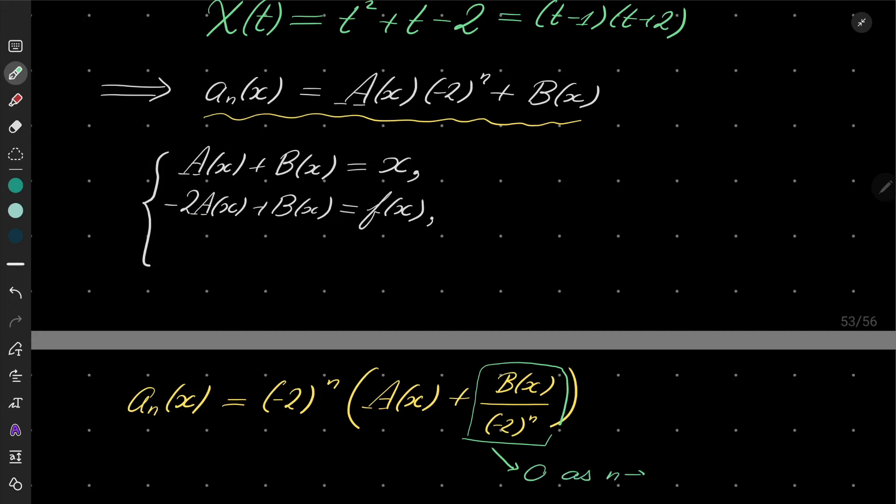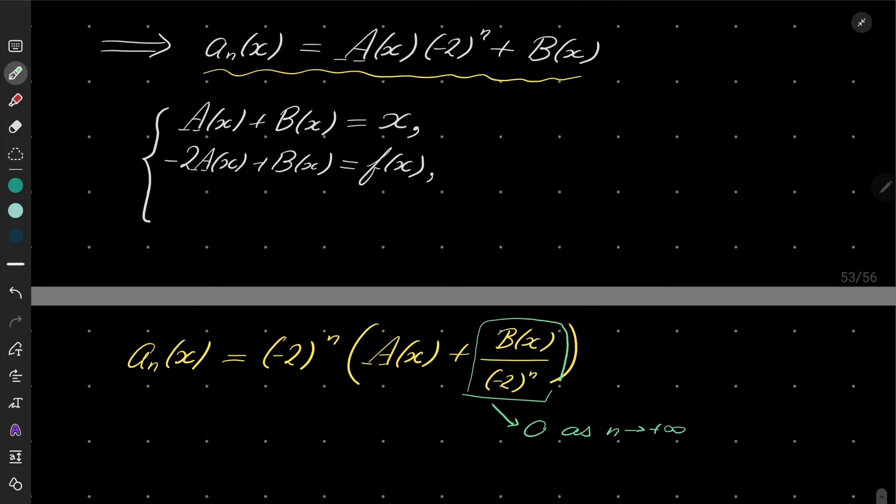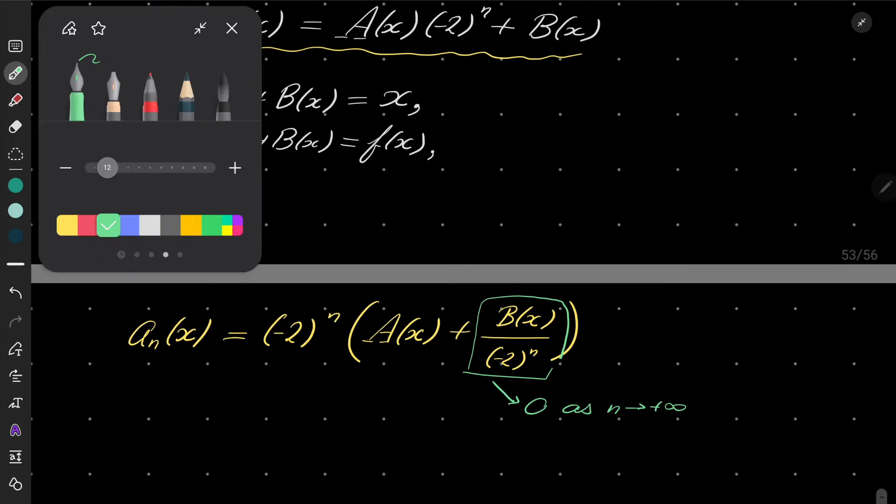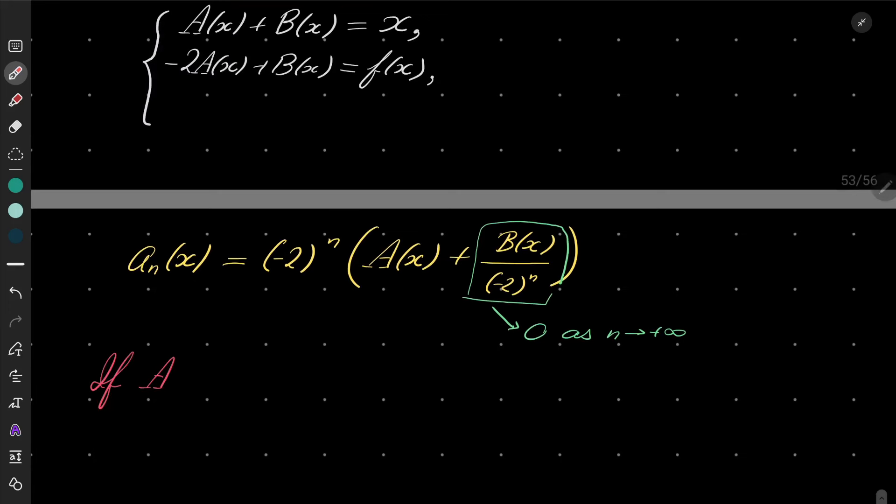Because if a(x) were to be non-zero, then what happens? Look, this part alternates between positive and negative values. This last part goes to zero.